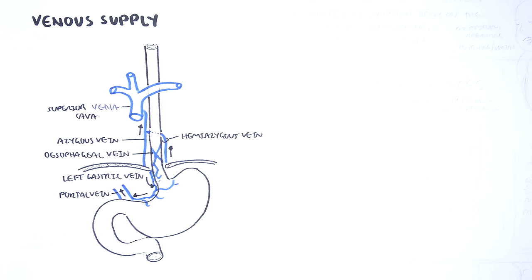The external muscle layer is still the longitudinal muscle. The most outer layer is the adventitia. Remember, there is no serosal layer in the esophagus. Lymphatic drainage at the lower third is to the gastric and para-aortic nodes.